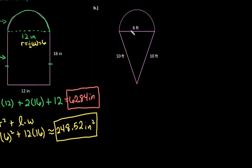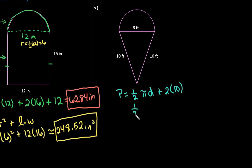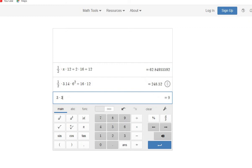For the second figure, we have a semicircle on top of an isosceles triangle — kind of like a two-dimensional ice cream cone. To find the perimeter, we do half of pi times d for the semicircle, plus 2 times 10 for the two equal sides of the triangle. Plugging in: one half times 3.14 times 6 plus 20 equals 29.42. So the perimeter is approximately 29.42 feet.